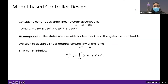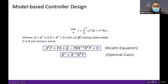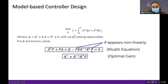Now we discuss the model-based and model-free controller design. Consider a system x-dot equals Ax plus Bu. We assume all states are available for feedback and the system is stabilizable. We design a linear optimal controller of the form U = -KX that minimizes a cost function, where Q is a symmetric positive definite matrix, R is a positive definite matrix, and (Q^(1/2), A) is observable.